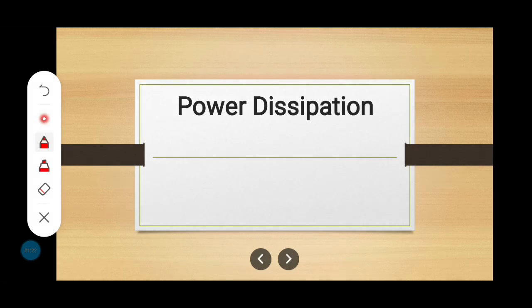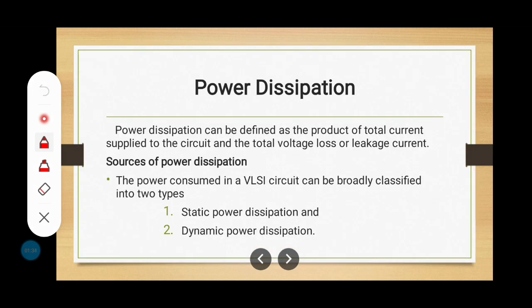Today's class I am going to discuss about power dissipation. This topic is very important in VLSI design because our ultimate aim of VLSI design is to minimize the power dissipation in integrated circuits. First we discuss the definition of power dissipation. The power dissipation can be defined as the product of total current supplied to the circuit and the total voltage loss or leakage current.